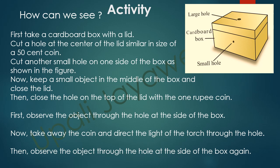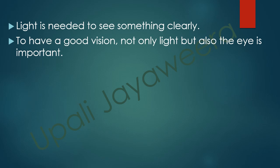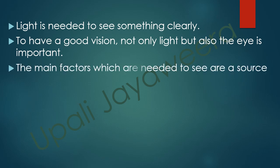In the second occasion, light rays come to the object, reflect, and come to our eyes through the small hole. So we can see the object. Light is needed to see something clearly. To have a good vision, not only light but also the eye is important. The main factors needed to see are the sources of light and the eye.